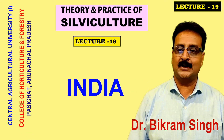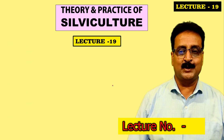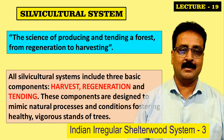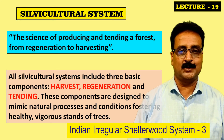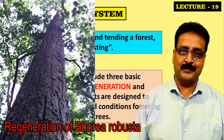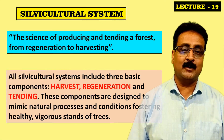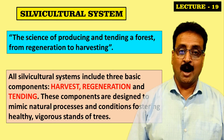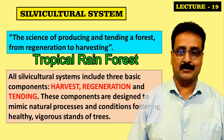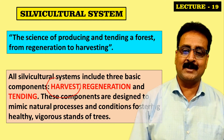This is Theory and Practice of Silviculture, lecture number 19. In the previous lecture we studied about the Indian Irregular Shelterwood System. In this lecture we will continue with the same system using two more examples — specifically how the Indian Irregular Shelterwood System is applied in tropical rainforests.